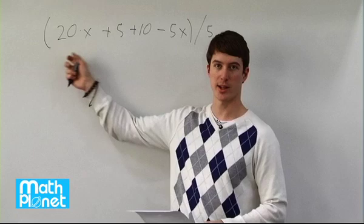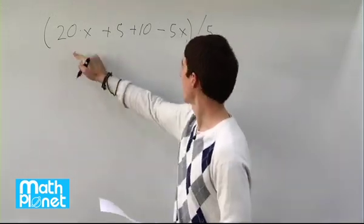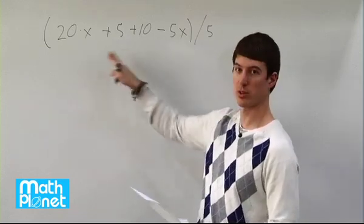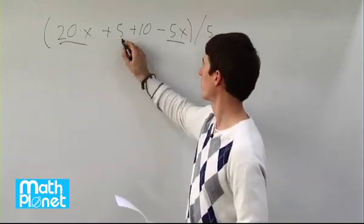First, let's simplify what's in the brackets, and then we'll see if we can distribute this divided by 5 through. So we have 20x and 5x, those are like terms, so we want to combine those. And then these will be combined as well, 5 plus 10.